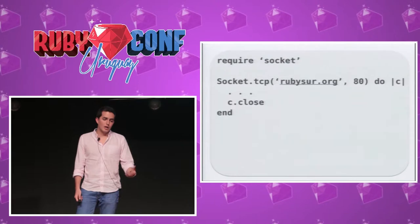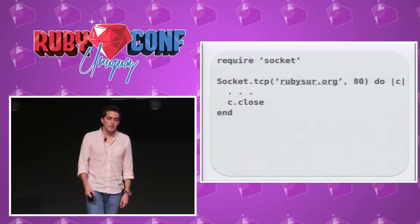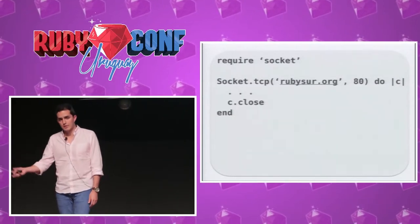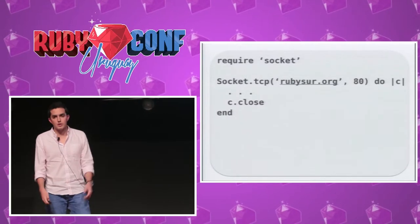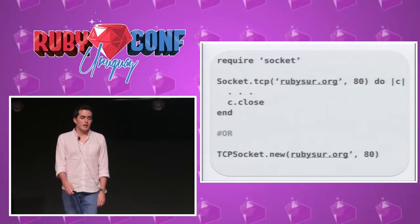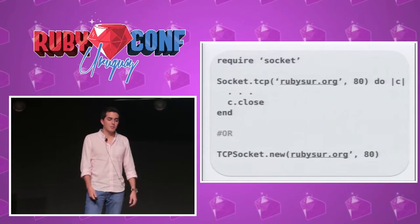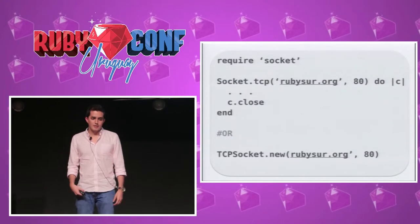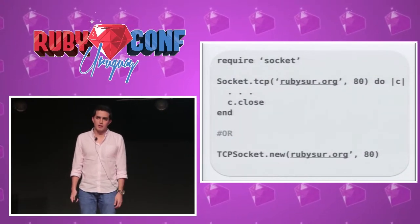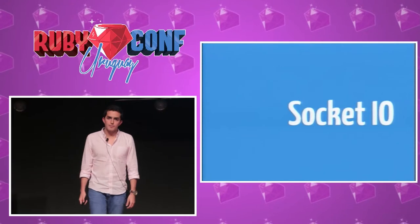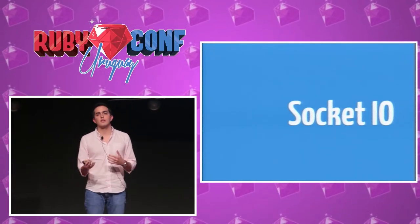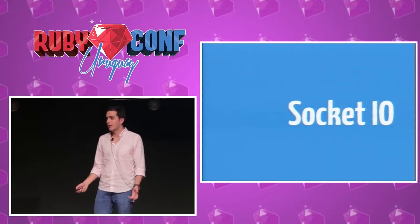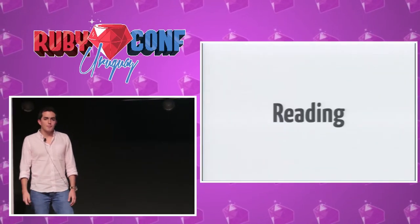For the client, we're now using TCPSocket with the host and the port, and we can pass a block. We have to close the connection because it doesn't close automatically. We also have the TCPSocket class which enables us to create a TCP socket, always passing the host. Now we're going to see how to use sockets to write and read data — so far we've only seen how to connect.